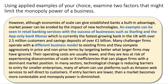Many challenger banks such as Monzo operate with a different business model and compete aggressively in both price and non-price terms, targeting customers that larger firms may have ignored. They keep their costs relatively low, avoiding diseconomies of scale or X-inefficiencies, and are therefore better able to survive those difficult early years. In many sectors, technological change is reducing barriers to entry for smaller businesses, many of whom can piggyback on platforms such as Amazon Web Services to sell directly online to customers. If entry barriers are lower, the market becomes more contestable and monopoly power is diminished.